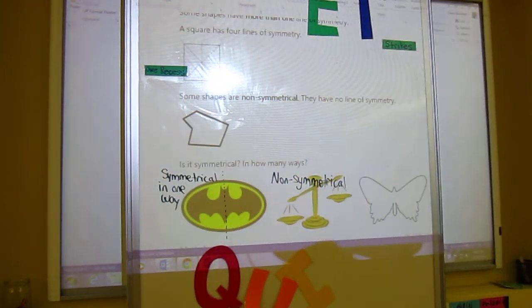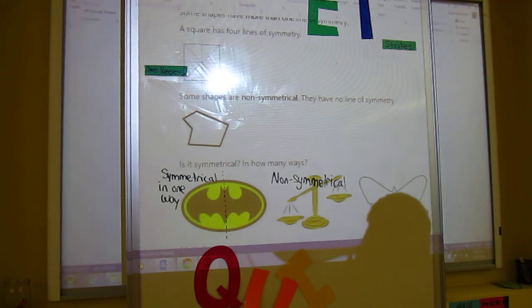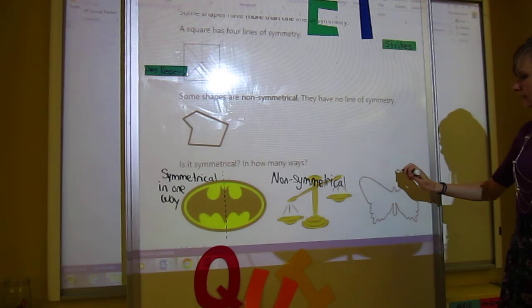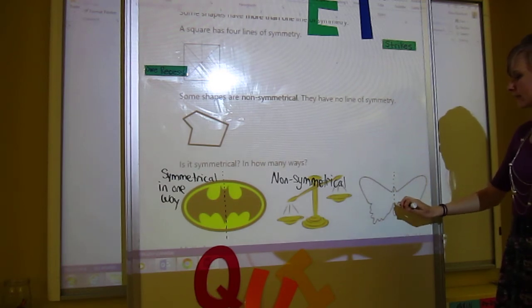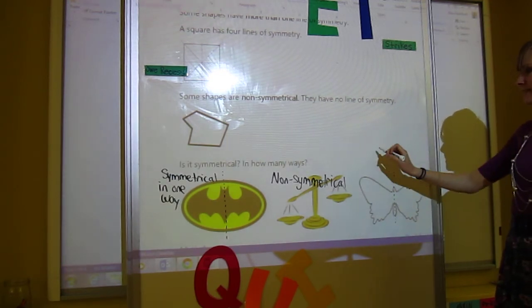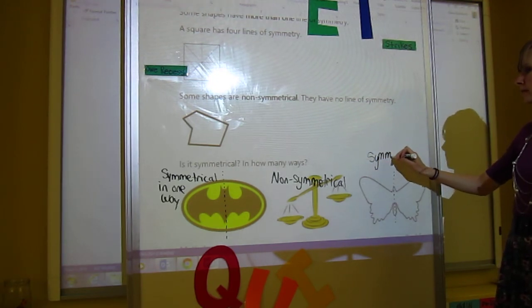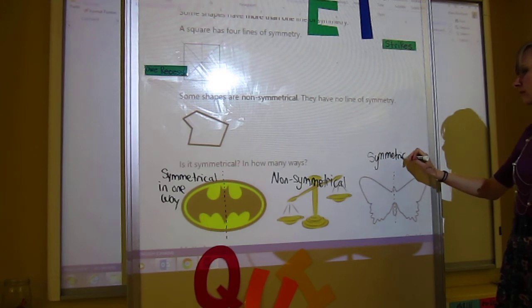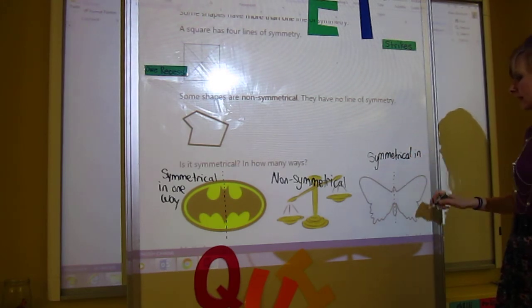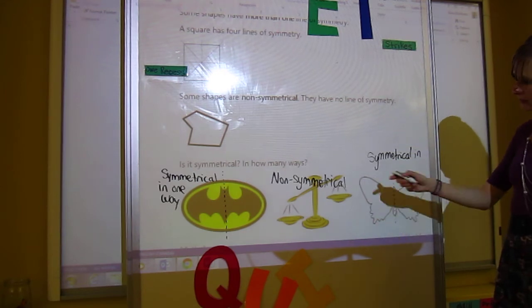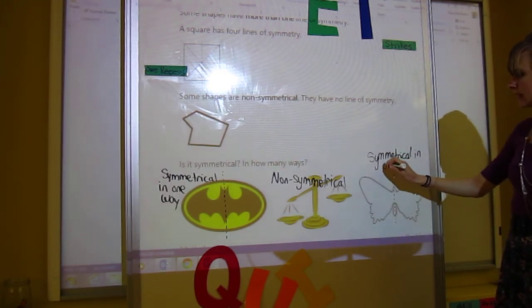Okay, and the last one right here is the butterfly. Actually, I don't think I put very hard images on here for you. Because this one is symmetrical, just like the bat symbol. And we couldn't go this way, we couldn't go this way, we couldn't go this way because the bottom is different from the top. So again, in one way.